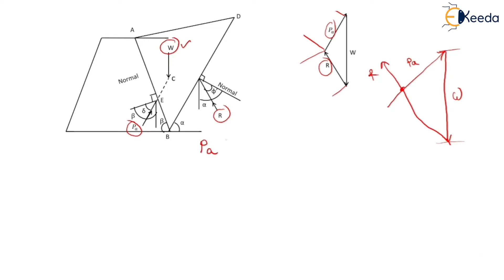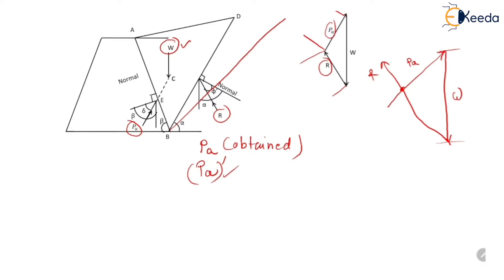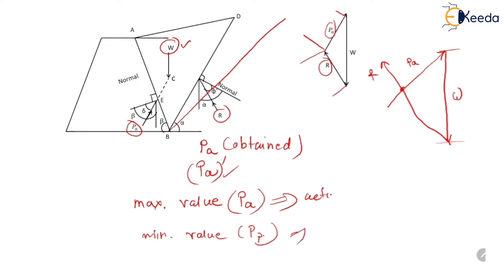By using Coulomb's wedge theory, we have obtained the value of PA for this failure wedge BD. Our next step is to assume a different failure wedge and determine another value of PA. We determine several values of PA for several failure wedges. The failure wedge which gives the maximum value of PA is the actual failure wedge in the active case; for passive pressure, the wedge giving the minimum value of PP is the actual failure surface.